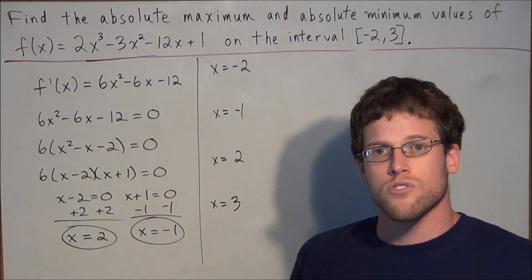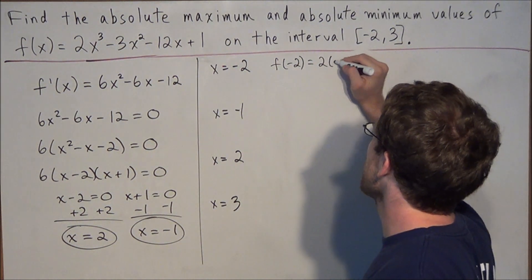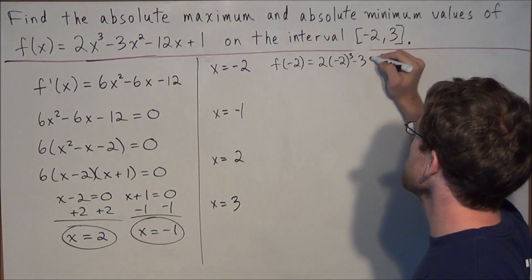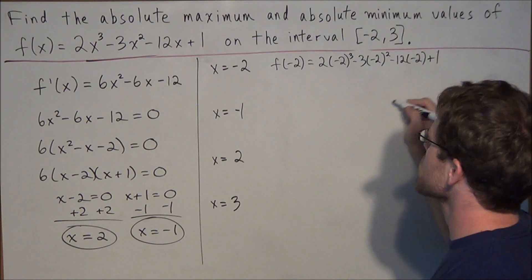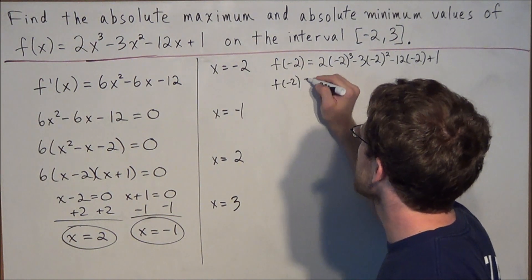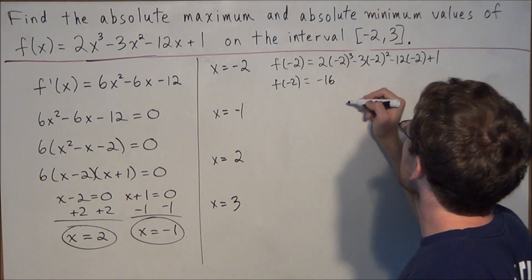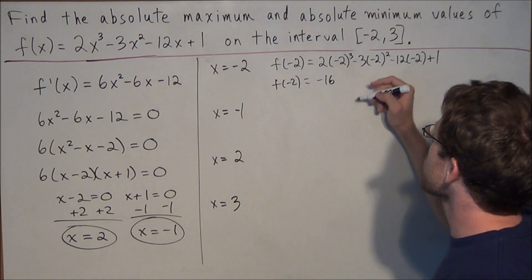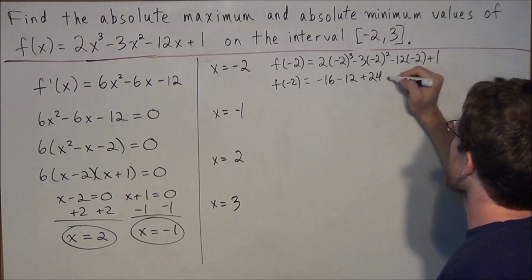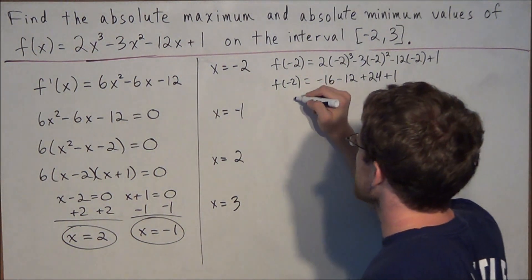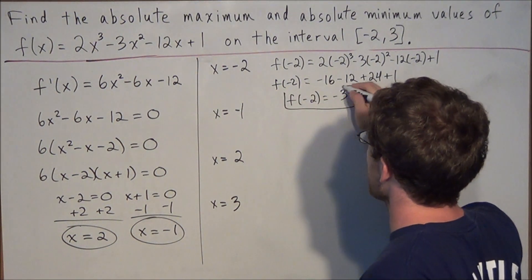We plug in negative 2 first: f(−2) = 2(−2)³ − 3(−2)² − 12(−2) + 1. Simplifying: (−2)³ = −8, times 2 is −16. (−2)² = 4, times −3 is −12. (−12)(−2) = +24, plus 1 gives 25. So −16 + 25 − 12 = −3. Therefore f(−2) = −3.